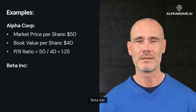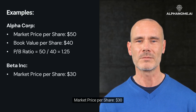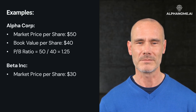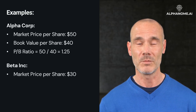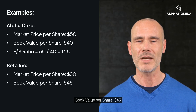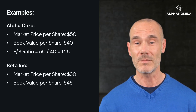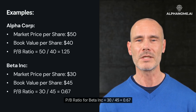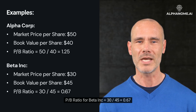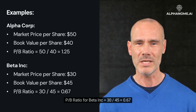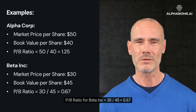BetaInc has a market price per share of $30 and a book value per share of $45. P/B Ratio for BetaInc = 30 ÷ 45 = 0.67.